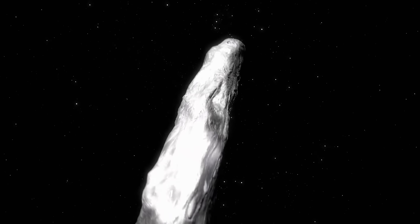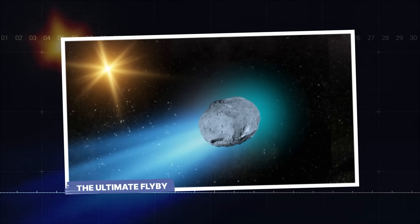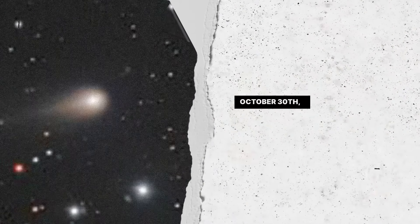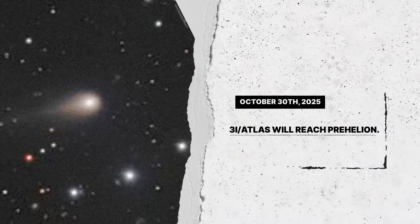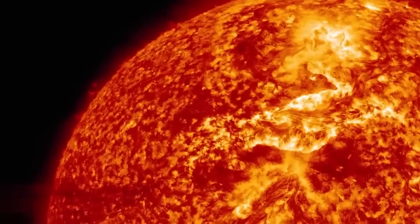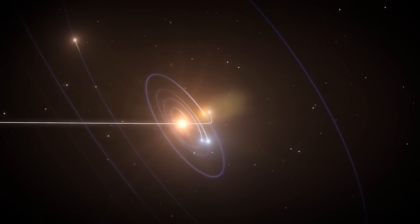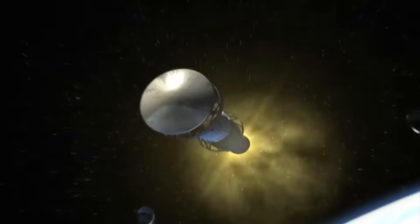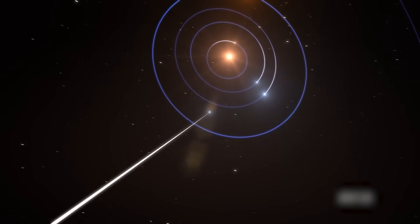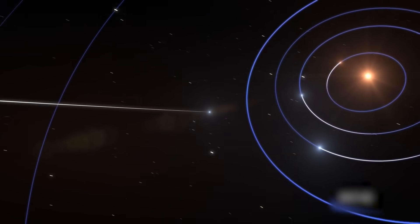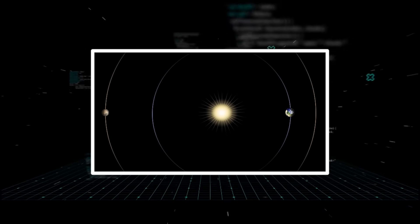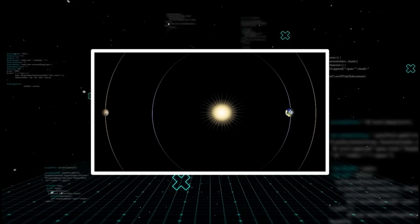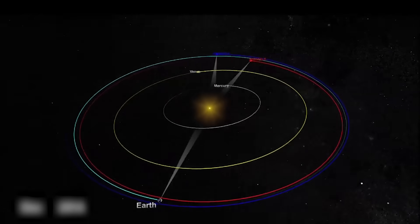The ultimate flyby. On October 30th, 2025, 3I Atlas will reach perihelion, its closest point to the sun. At this moment, it will be bathed in the most intense heat and radiation, and its mysterious engine will be under maximum stress. This is when any object, natural or not, reveals its true nature. But there's a catch, a massive one. As it makes this critical pass, the comet will be on the far side of the sun from our perspective. It will disappear behind the sun's blinding glare in an event called a solar conjunction. For weeks, all our telescopes will be blind. We won't be able to see a thing.